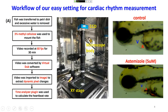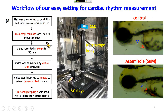The setup is very simple: a dissecting microscope coupled with a camera or CCD, and an XY motorized stage for fine adjustment of zebrafish position. The first step is recording the image of the zebrafish with a frame rate set to 60 frames per second. Then we use ImageJ to extract the dynamic pixel data and apply a time-series analysis plugin to analyze the sequential chronology of the heartbeat.